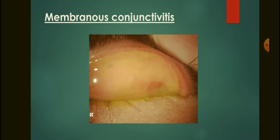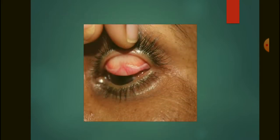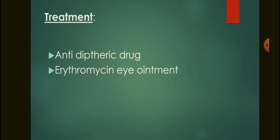Membranous conjunctivitis — by its name, we can understand that a membrane forms. It is diagnosed by the presence of a membrane as well as mucopurulent discharge, and the lids will be edematous. Here we can see a membrane forming in the palpebral conjunctiva. The causative organism is Corynebacterium diphtheriae. Treatment includes anti-diphtheric drugs and erythromycin eye ointment.